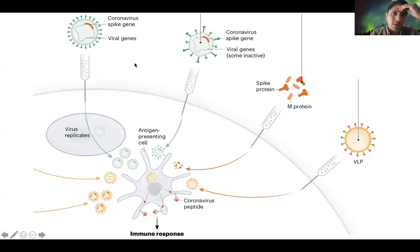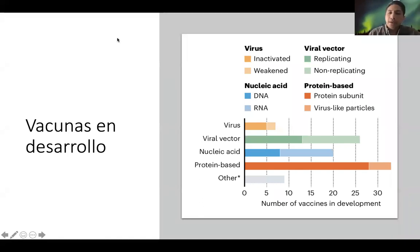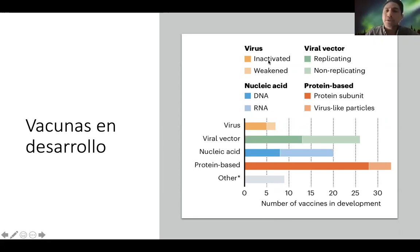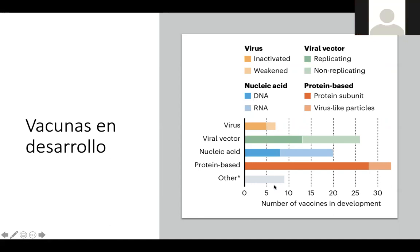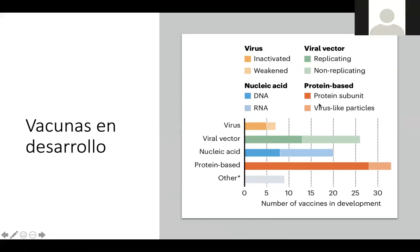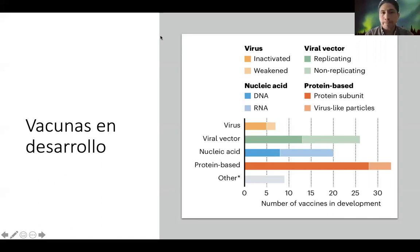Hay muchos tipos de vacunas que están en desarrollo: de virus inactivados o debilitados, de vectores virales replicantes o no replicantes, basadas en ácidos nucleicos, o en proteínas y partículas del mismo virus, incluyendo la proteína de espiga. Esas son las generalidades. ¿Quieren empezar entonces con algunas de las preguntas?